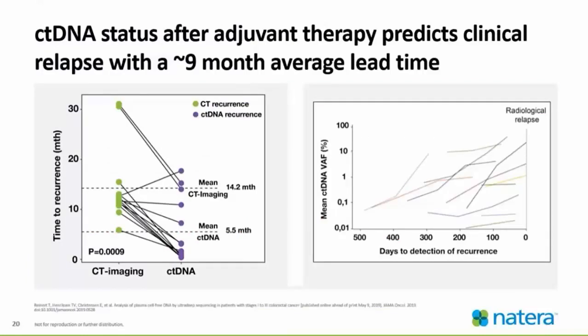ctDNA status after adjuvant therapy predicts clinical relapse with about a nine-month average lead time. This means ctDNA recurrence is found earlier than using CEA alone or CT imaging. CEA can show false positives at times, so Signatera is able to find recurrence nine months earlier, which is quite significant. Even if CT imaging is showing no evidence of disease and the Signatera result is positive, this may warrant additional imaging such as MRI or PET-CT.